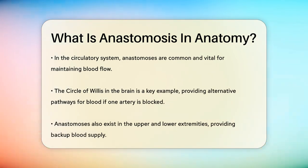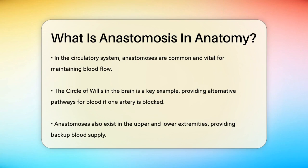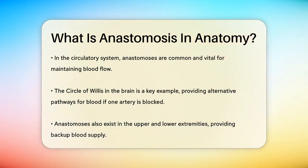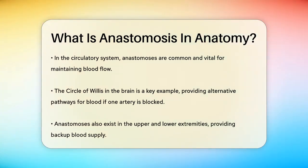For example, in the brain, there's something called the Circle of Willis, which is a network of arteries that form a circle. This circle ensures that if one artery is blocked, blood can still reach the brain through other arteries in the circle — it's like having multiple paths to the same destination.